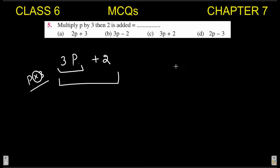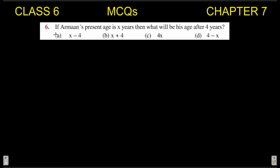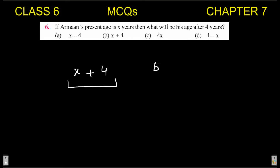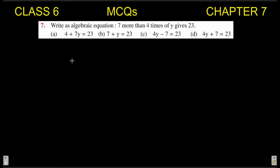3p + 2 is in option C, so this is your answer. Next MCQ: if Arman's present age is x years, then what will be his age after four years? His present age is x; after 4 years we add four to the present age, giving x + 4. Option B has x + 4, so B is your answer.